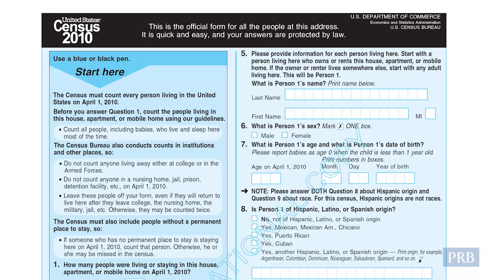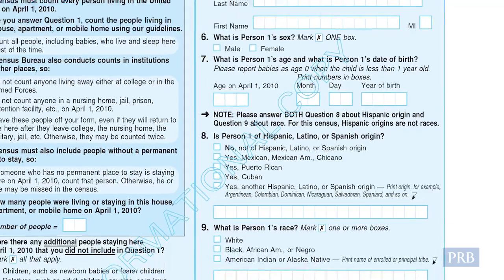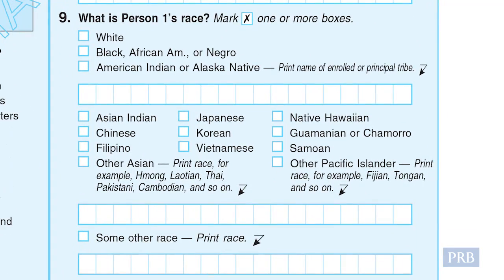So how do we measure race in the United States? In the 2010 census, people could choose from a series of boxes, so they could say that they were white, black, American Indian, or several other options. Those who identified with more than one race could select more than one box, and there were about 9 million people in 2010 who identified with multiple racial groups.